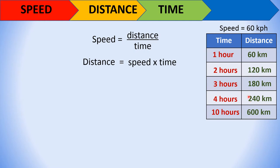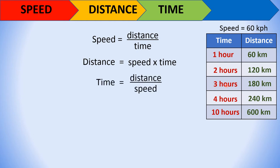Now comparing time: 60/60 = 1 hour, 120/60 = 2 hours, 180/60 = 3 hours, 240/60 = 4, 600/60 = 10. So to get time, divide distance by speed. Time is equal to distance over speed.